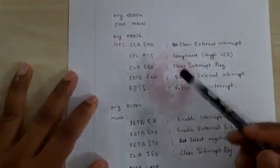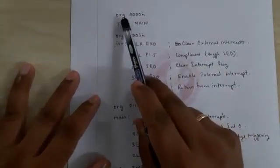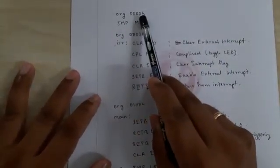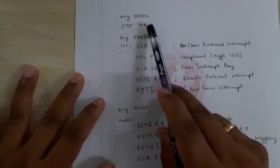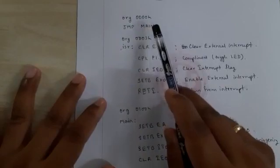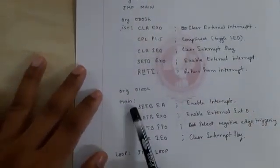This is the program required to operate the switch and LED. Whenever we reset the 8051, it goes to address location 0000h, so here we write a simple jump instruction. It will go to the main program at address 0010h.